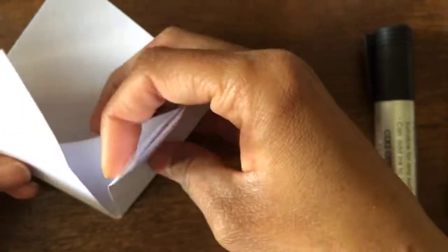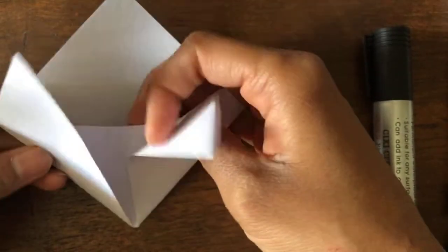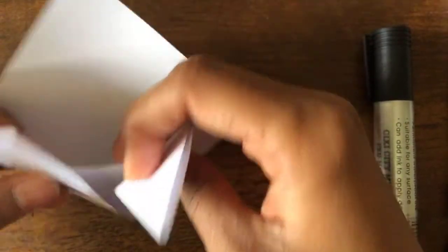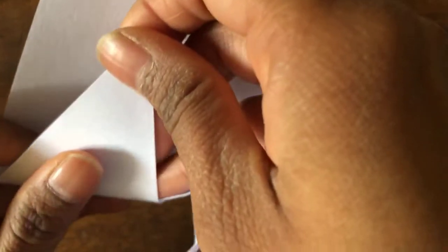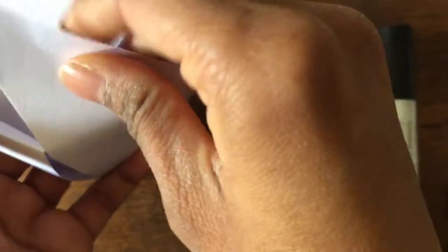Now you have these sides above, these two sides above. You will open it up like this. And then you will put one side in the origami, like in the pocket here. So you will put this one also in the pocket.